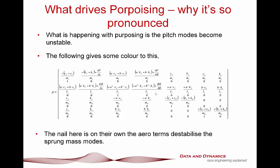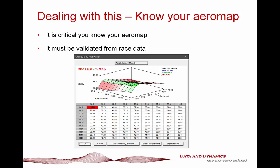Dealing with this: first things first, you absolutely must know your aero map. If you do not know your aero map, you might as well pack up and go home. One of the things that is absolutely critical is that you have to validate this aero map from race data. One of the discussions around the porpoising issues affecting Formula One cars is that teams haven't been able to get the cars low enough with either CFD analysis or wind tunnel testing to expose these critical elements of the aero map. Your race data is always the final arbiter of what the car is doing — it's your start point and your end point.